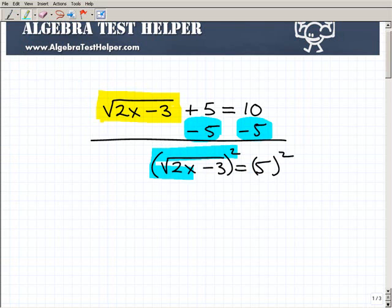So here, I'm going to square both sides of the equation with the goal of getting rid of this radical sign. So the square root of 2x minus 3 squared is simply 2x minus 3. And 5 squared, of course, is 25.